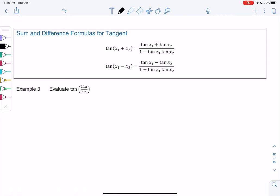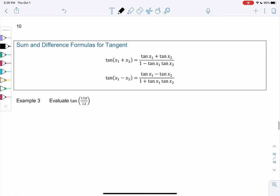Alright, we're back in section 4.6. So tangent has similar identities to sine and cosine. If we take sine of x plus x₁ over cosine of x plus x₁ and simplify those identities a little bit, we'll end up with these tangent identities.